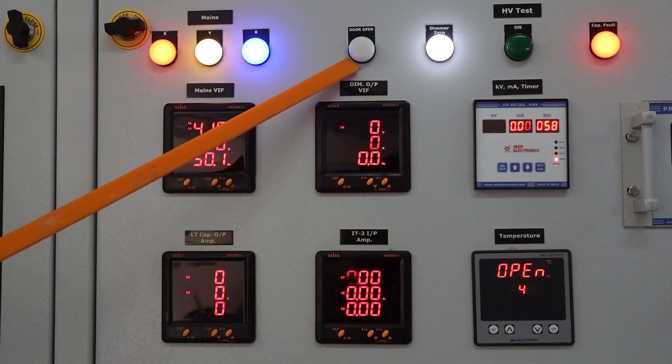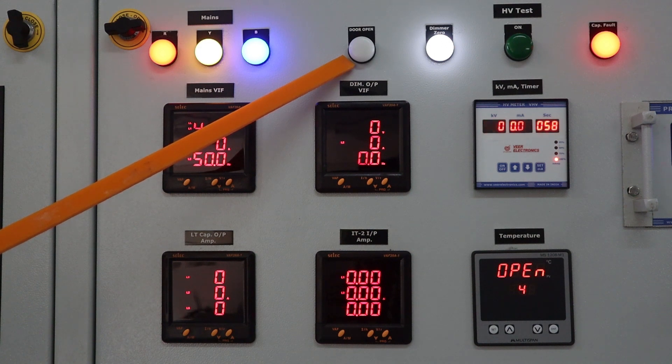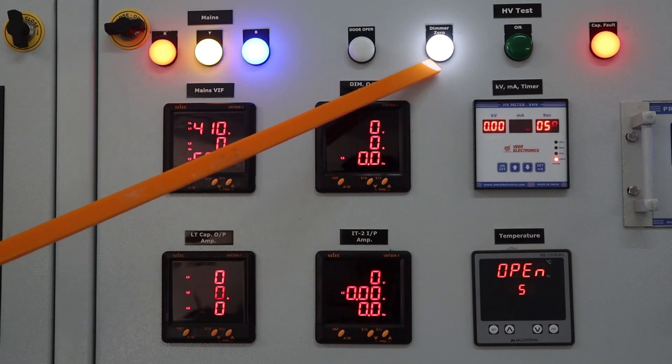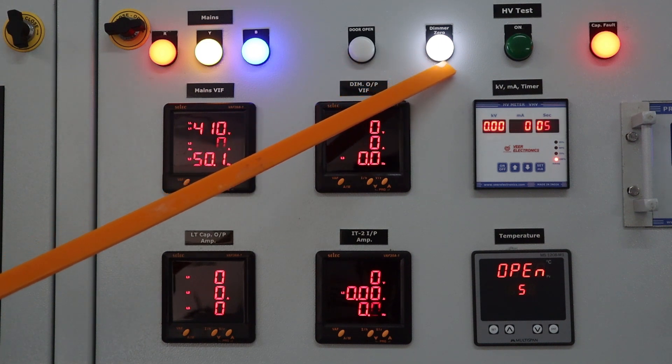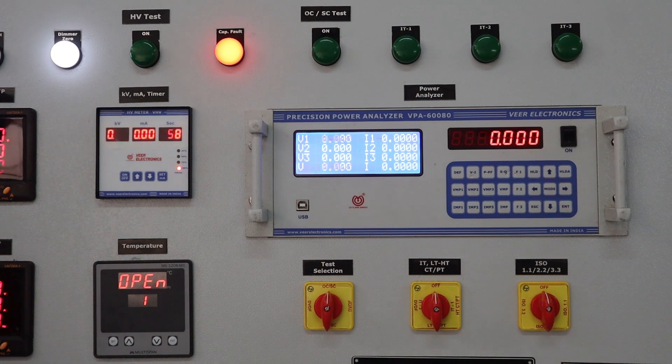This is door open indication lamp. It shows interlocking of transformer test job area. This is dimmer zero indication lamp. This is HV test on off indication lamp.